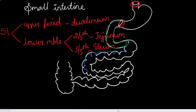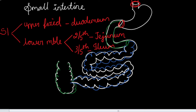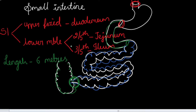As a continuation from the duodenum, jejunum arises and forms two-fifths of the small intestine. From that extends the ileum, which forms three-fifths of the small intestine, and it gets connected with the cecum at the ileocecal junction. The cecum forms the first part of the large intestine. The total length of the small intestine is six meters.